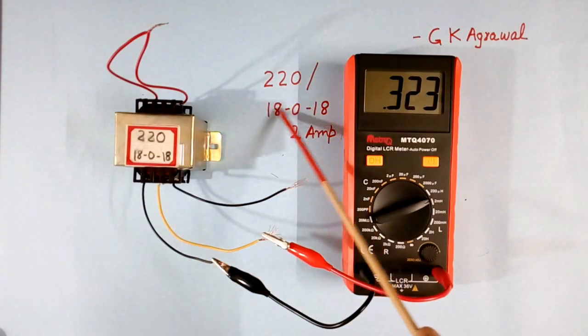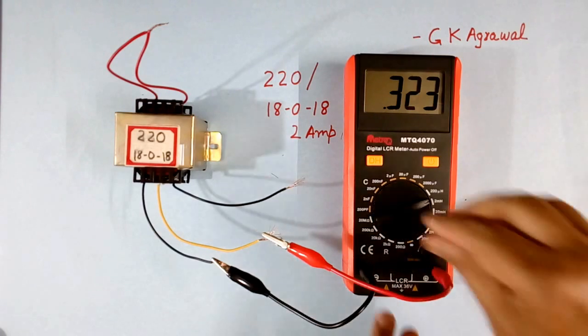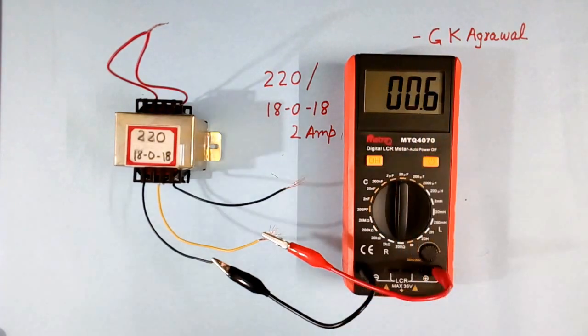Because the number of turns here are less. Here it was more. And the resistance will be 1.7 ohms. Earlier it was coming more than 3 ohms.